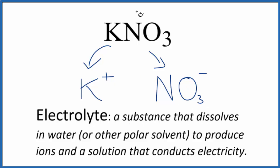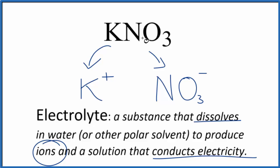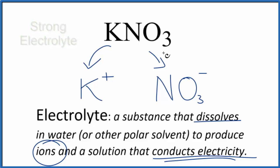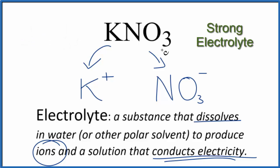That means potassium nitrate, because it's soluble, dissolves and produces potassium and nitrate ions, and it will conduct electricity. So KNO₃ is an electrolyte — specifically a strong electrolyte — because it completely breaks apart into its ions and conducts electricity very well. It's a strong electrolyte.